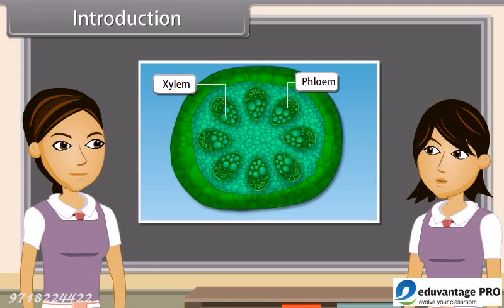We can define tissues as a group of cells similar in nature that work together to perform a particular function. For example, nerve tissue.